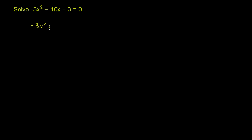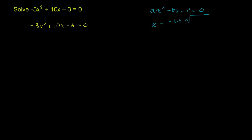Let me just rewrite it: negative 3x squared plus 10x minus 3 is equal to 0. And actually, I'll solve it twice using the quadratic formula to show you that as long as we've manipulated this in a valid way, we get the exact same roots. The quadratic formula tells us that if we have a quadratic equation in the form ax squared plus bx plus c equals 0, then the roots are x equals negative b plus or minus the square root of b squared minus 4ac, all of that over 2a. This is derived from completing the square in a general way — no magic here. This formula is actually giving you two solutions, because you have the positive and negative square root.